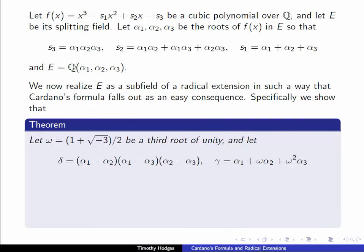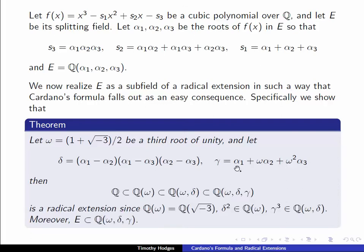We now realize E as a subfield of a radical extension in such a way that Cardano's formula falls out easily. Specifically, what we're going to show is if ω is a third root of unity, if δ is this product of differences of the roots, and if γ is this combination of the roots and ω, then our radical extension is ℚ ⊂ ℚ(ω) ⊂ ℚ(ω,δ) ⊂ ℚ(ω,δ,γ).